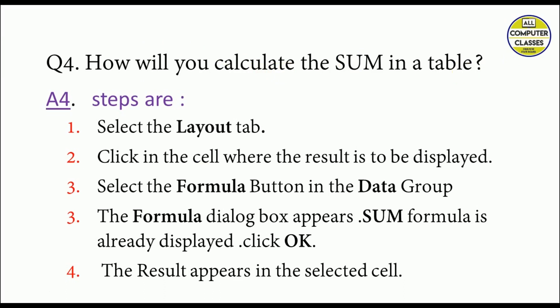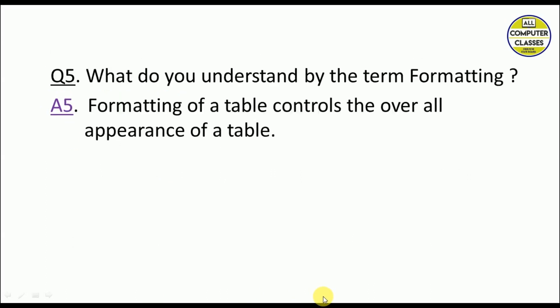How will you calculate the sum in a table? After entering your data, select the Layout tab and click in the cell where the result is to be displayed. Then go to the Data group and click the Formula button. A formula dialog box appears with the SUM formula already displayed. Just click OK and the result appears in the selected cell.